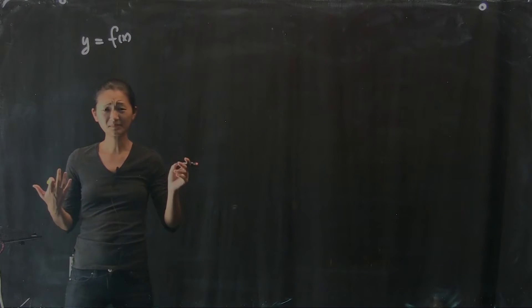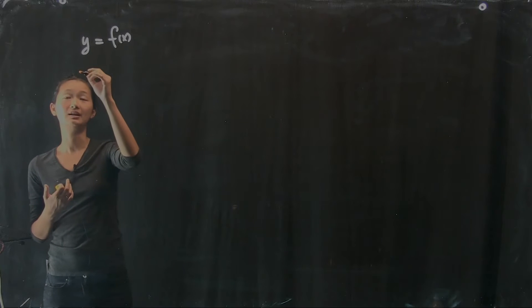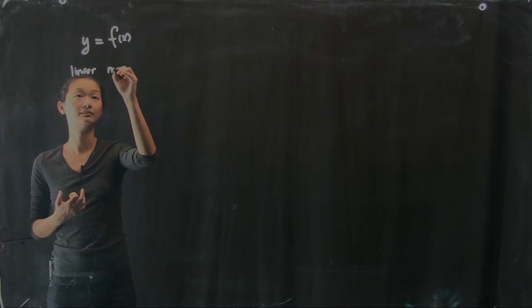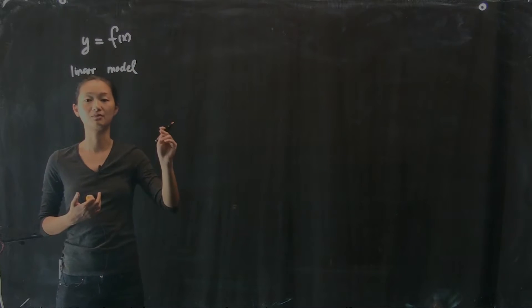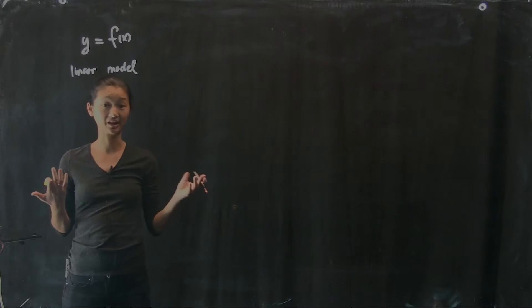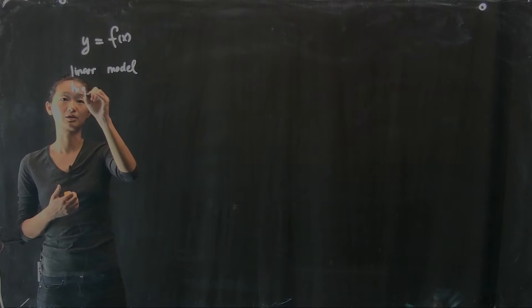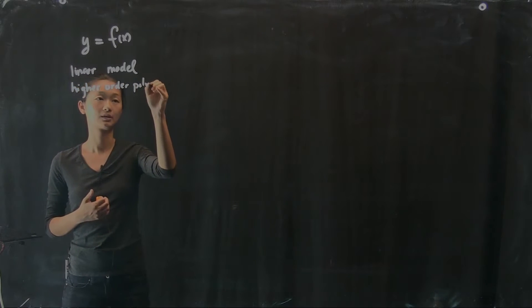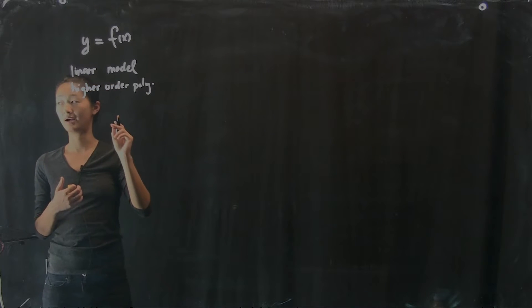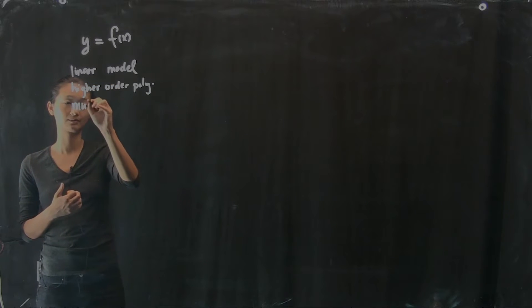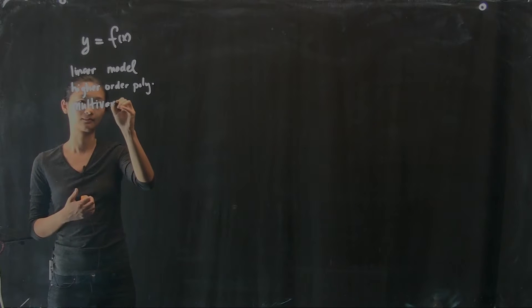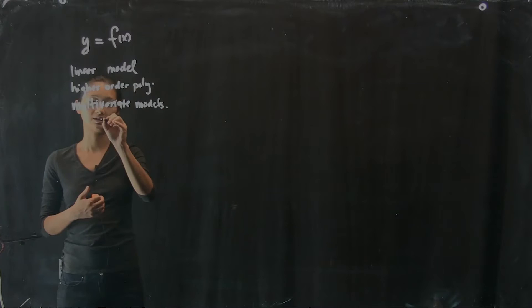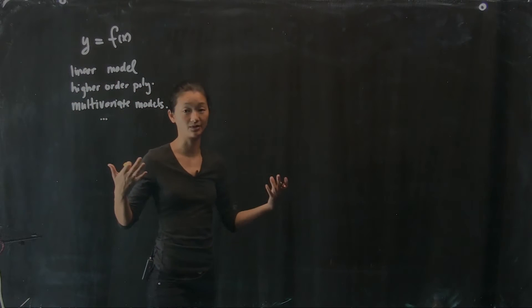And so as we go through in complexity, we can go from a linear model, right, assuming that y is a linear function of x. We can have higher order polynomial models. We can have multivariate models, and et cetera. And there's lots and lots of these models that we can build.